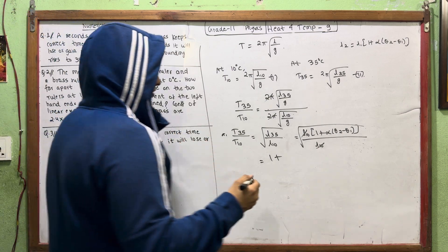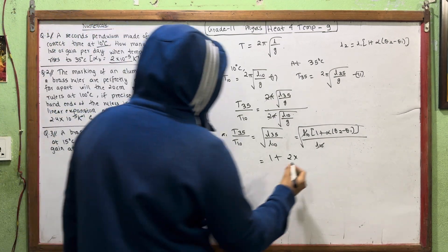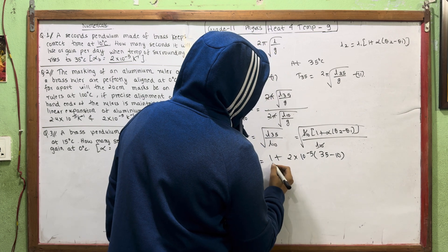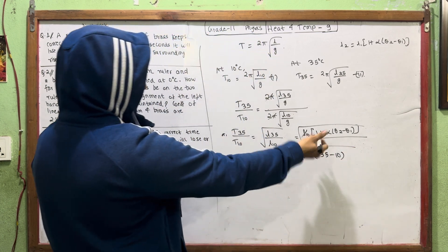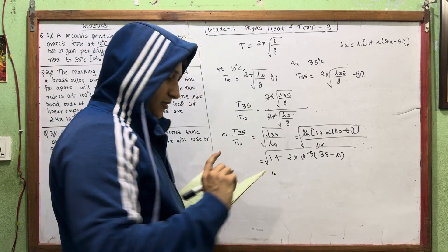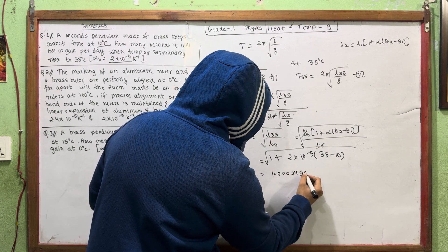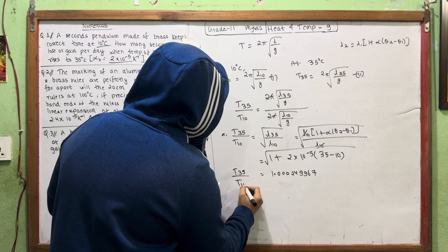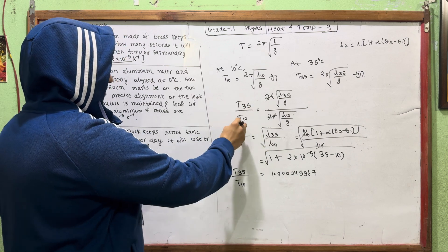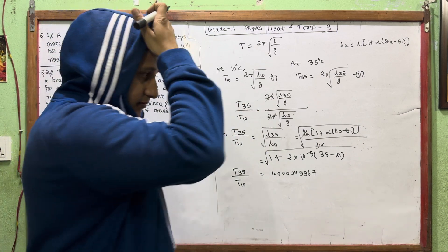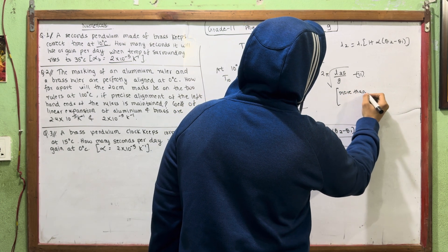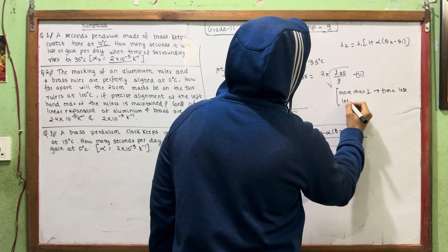Using α = 2 × 10⁻⁵ for brass, with θ2 = 35 and θ1 = 10, we compute T35/T10. Working through the calculation, we get approximately 1.00024996, and then T35/T10 comes out to about 1.000249967.